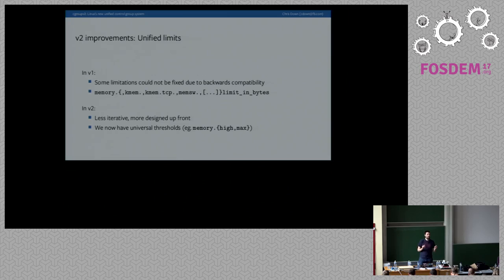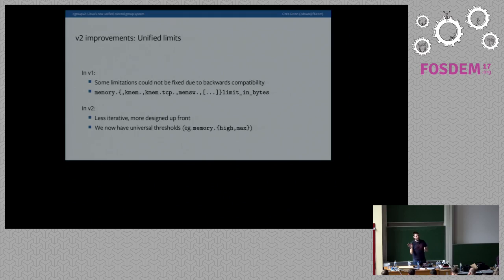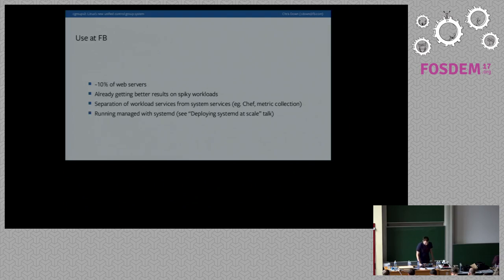If you do want to limit a very specific kind of resource, you should do that through a new dedicated controller. The PID controller is a good example — in the early days of cgroups it was considered to limit PIDs by limiting certain types of memory, but that's really hard. Instead, we now have a PID controller that specifically controls that resource. That's the reasonable way to do very specific kinds of limiting.